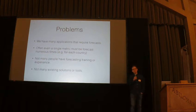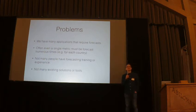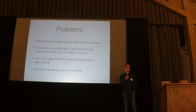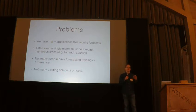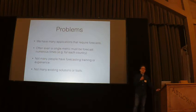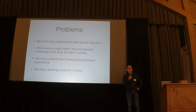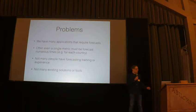Many of the people at Facebook don't have forecasting training or expertise. And if you go and try to read up on forecasting, you're going to find that there's a lot of domain knowledge involved — people who are good at forecasting have been doing it for a very long time. So when you have a company with 20,000 people and thousands of them working with data, it can be really challenging for them to effectively produce forecasts. There weren't very many existing solutions or tools that we could really rely on.